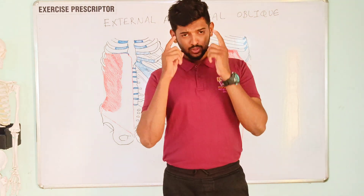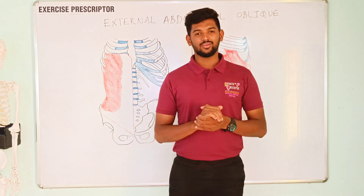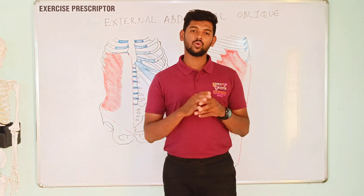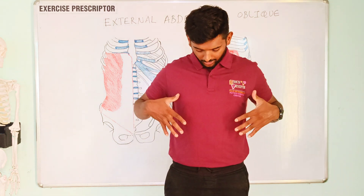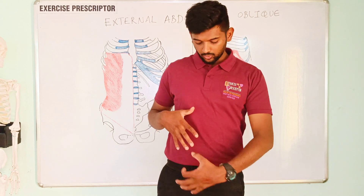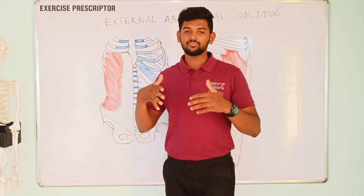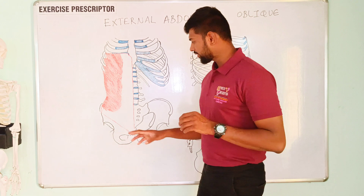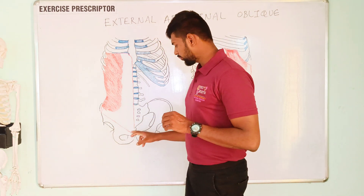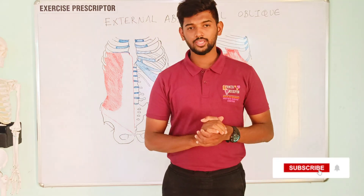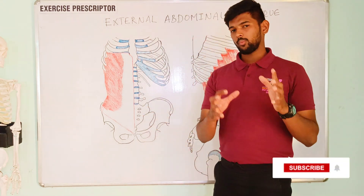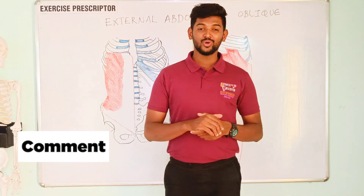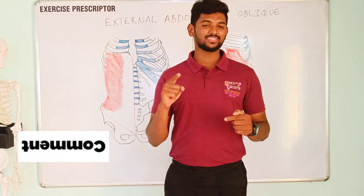Key points: First, to distinguish internal from external abdominal oblique, remember that the external abdominal oblique is also called the 'pocket muscle' — when you wear a coat or jacket and put your hand in the pocket, your finger orientation mimics the external abdominal oblique fiber orientation. Second, the aponeurosis of the external abdominal oblique attaches from the ASIS (anterior superior iliac spine) to the pubis, forming the inguinal ligament. Third, the aponeurosis of the external abdominal oblique is also called the rectus sheath because it covers the rectus abdominis muscle. That's all — hope you enjoyed this video. Don't forget to subscribe, like, and share.